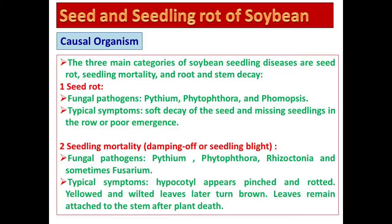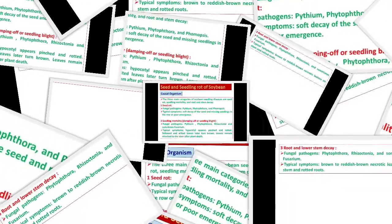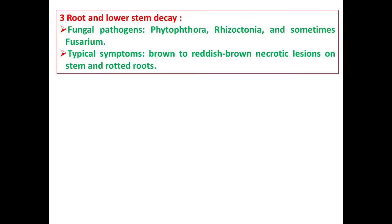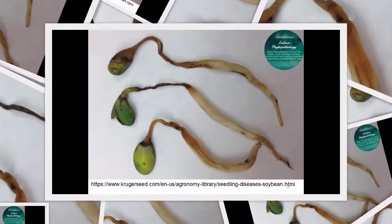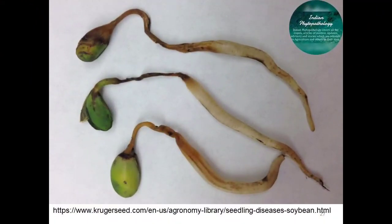The most important disease of soybean is seed and seedling rot. This disease occurs in three phases: seed rot, seedling blight, and root and stem decay. Here you can see the symptoms of all three phases.